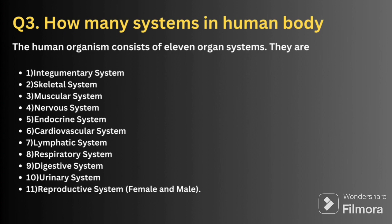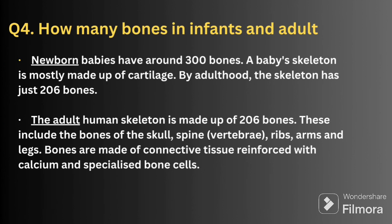The third question is: how many systems are there in the human body? The human body consists of totally 11 systems: integumentary, skeletal, muscular, nervous, endocrine, cardiovascular, lymphatic, respiratory, digestive, urinary, and reproductive system — both male and female. When explaining about a system, you have to tell it very clearly. Whenever you are learning a system, note down at least 60 points about that system so you can say it fluently at the time of the interview.